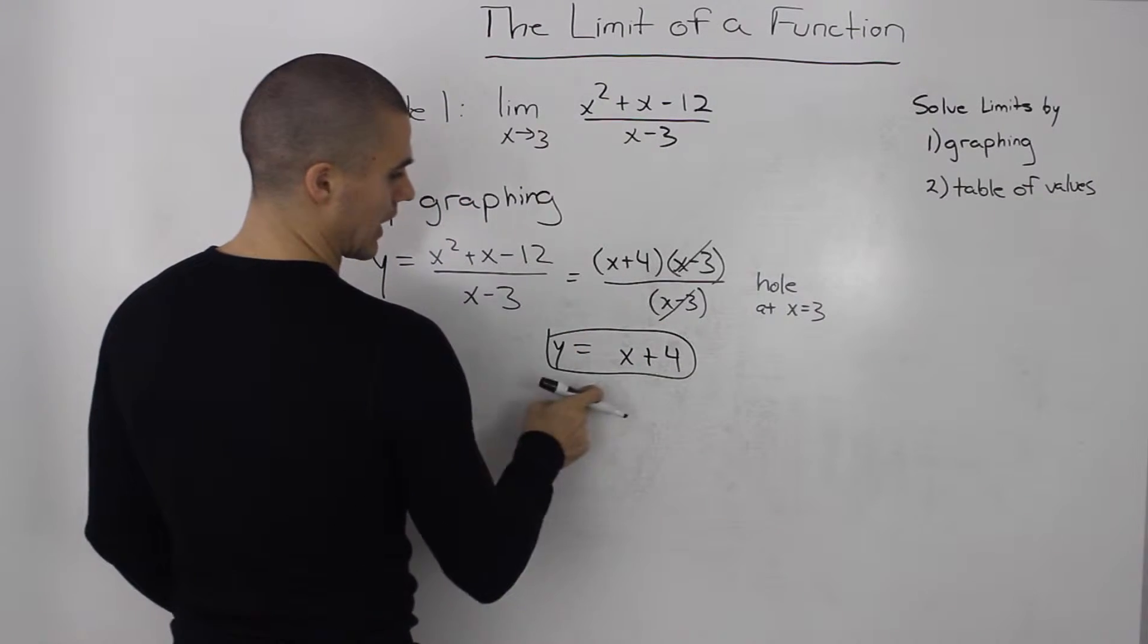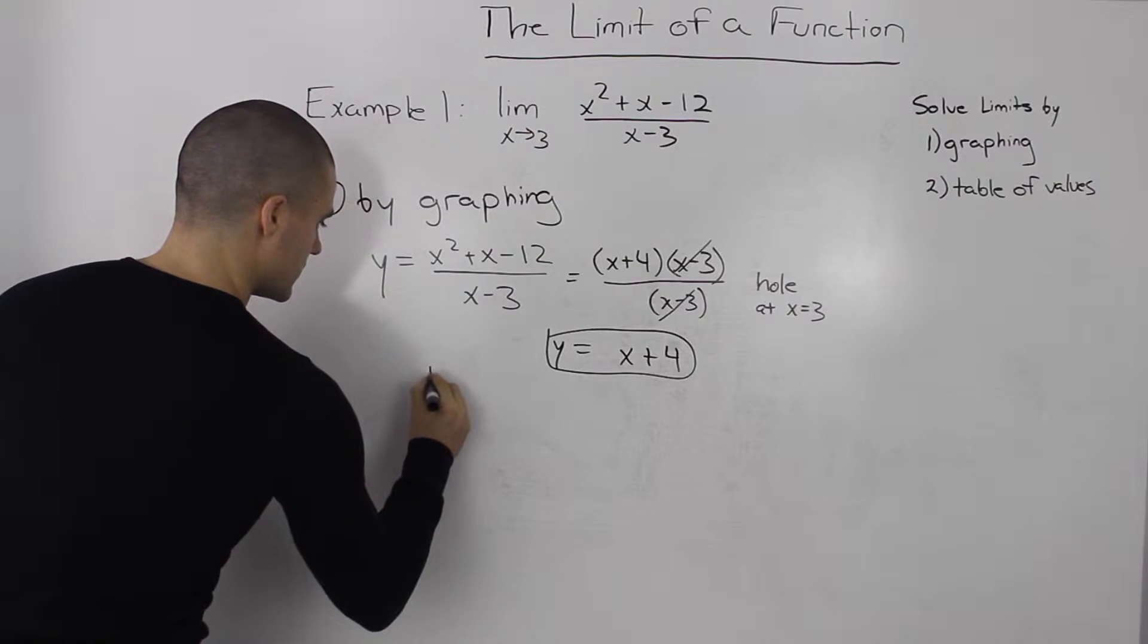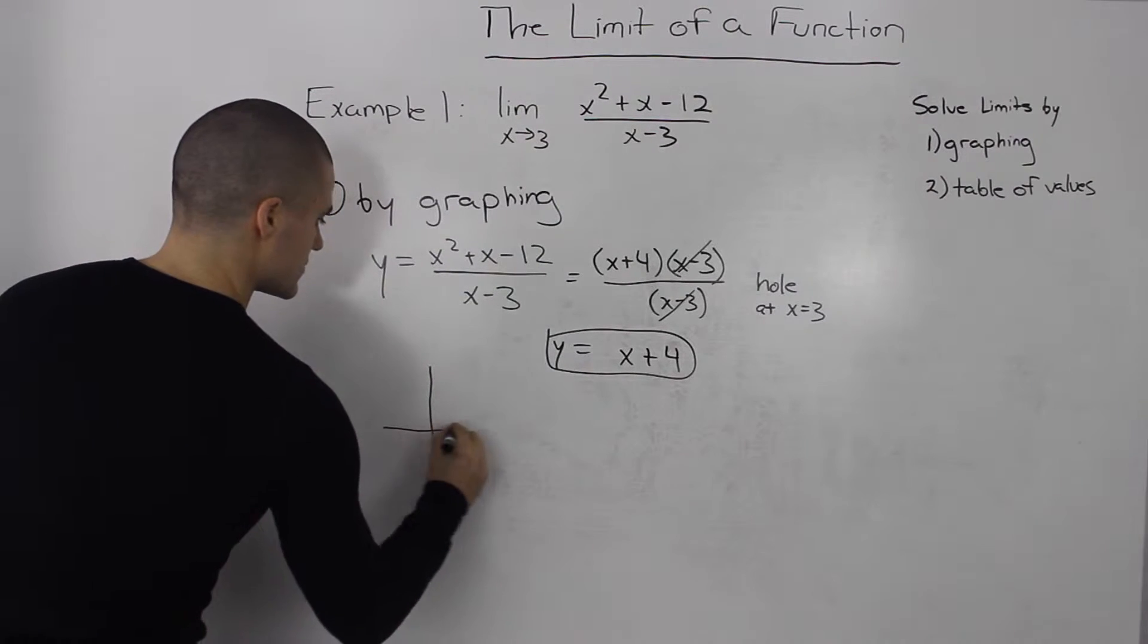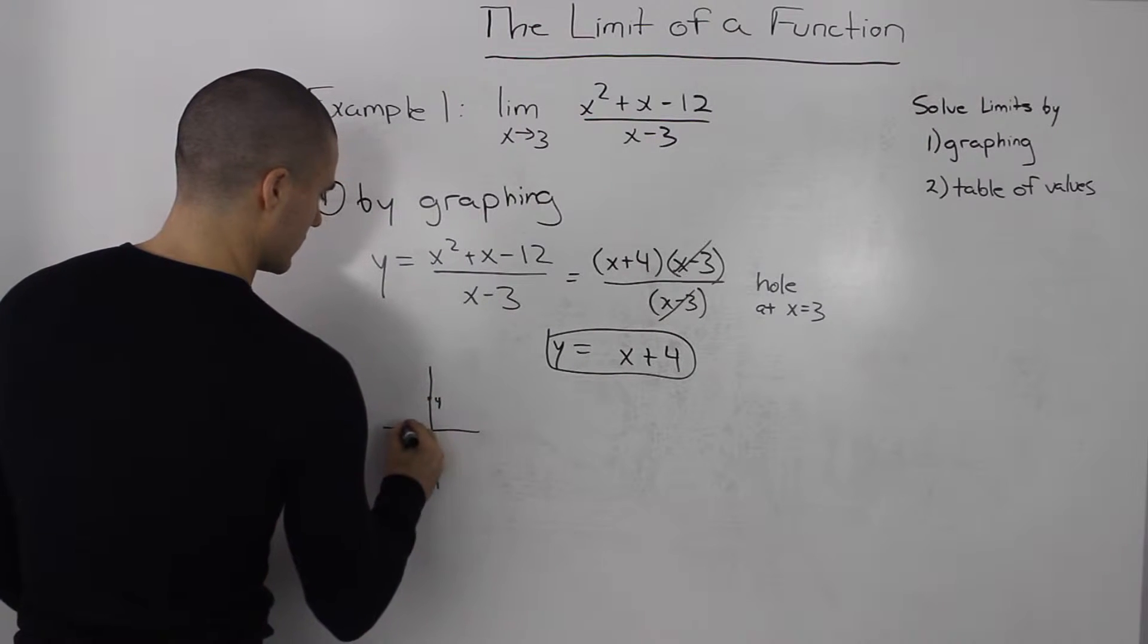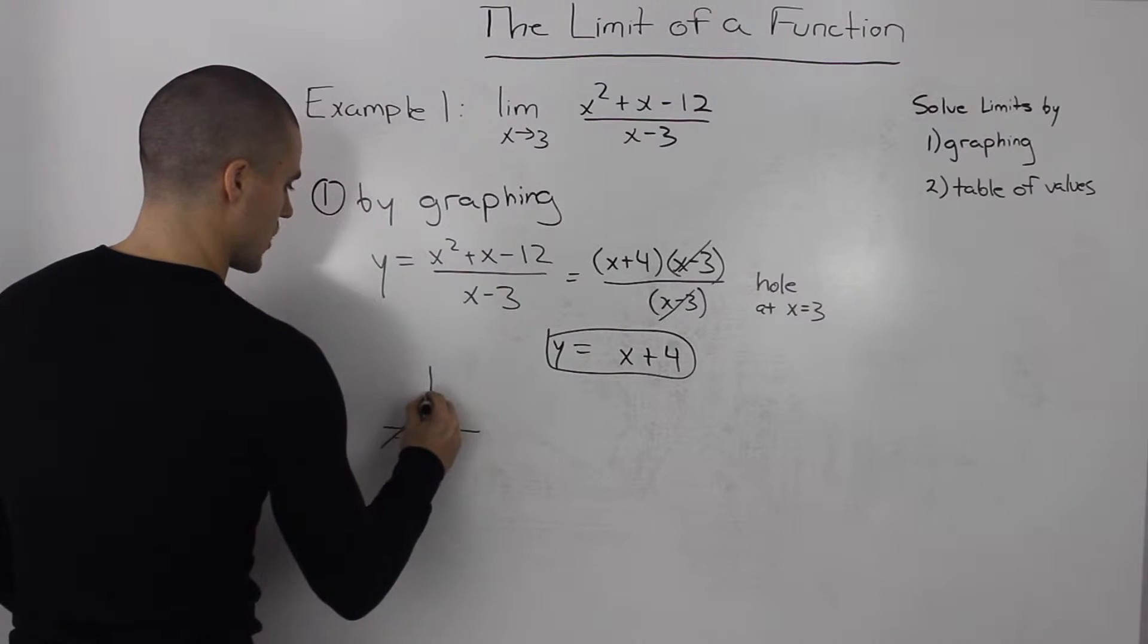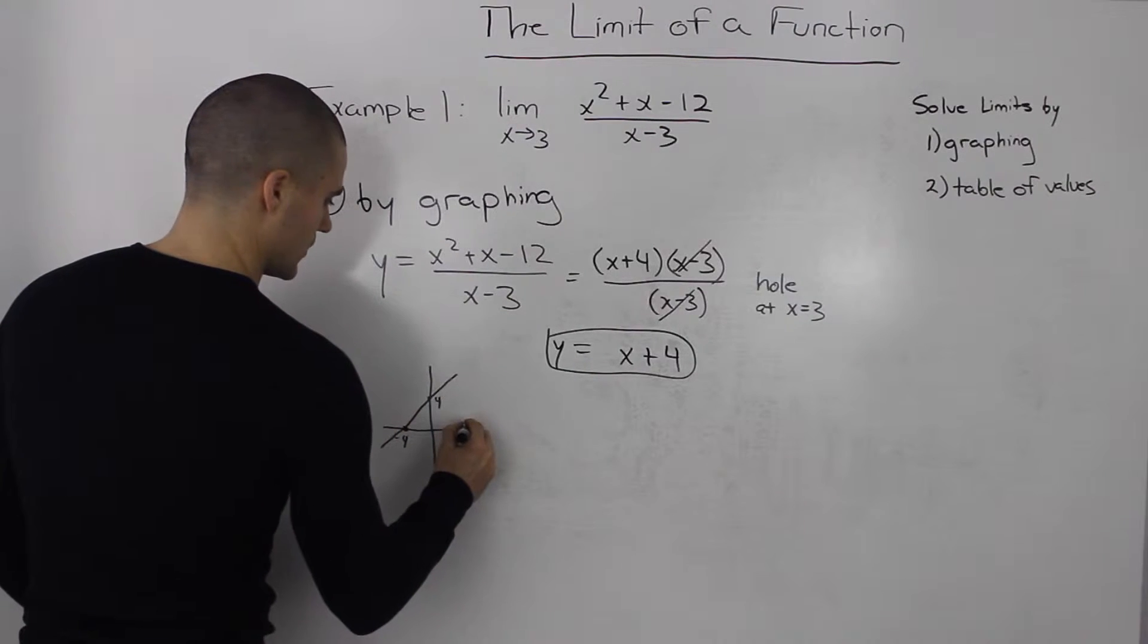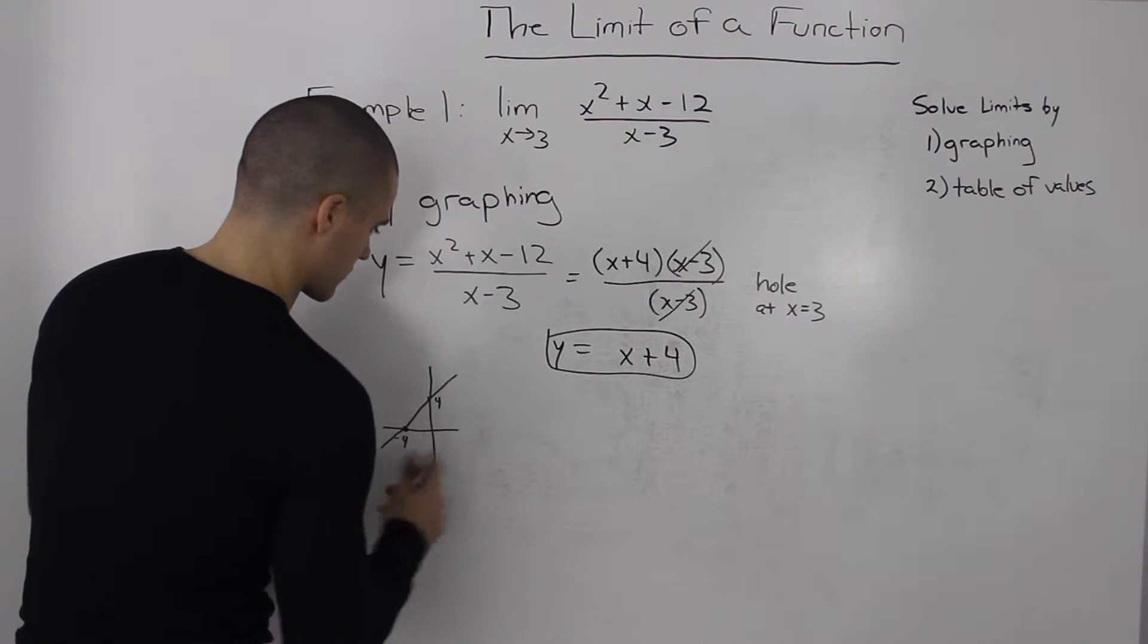We've got to graph this line y equals x plus four, and there will be a hole at x equals three. For x plus four, there's a y-intercept at four and an x-intercept at negative four.